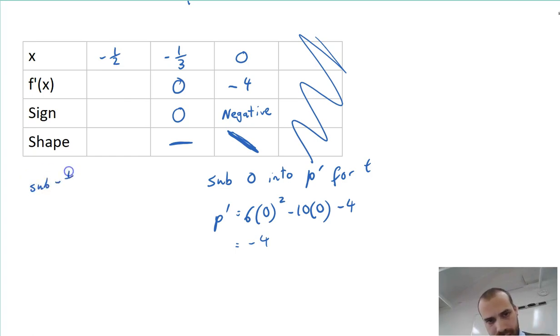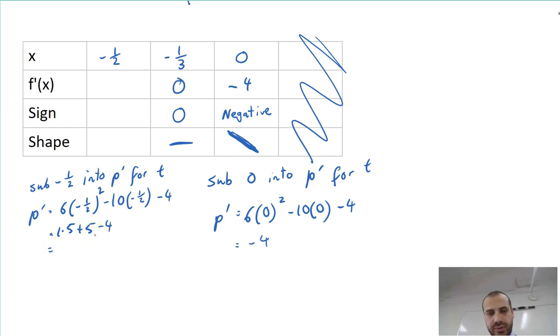Sub negative 1 half into p dash for t. p dash is going to be equal to 6 times negative 1 half squared minus 10 times negative 1 half minus 4. 1.5 plus 5 is 6.5 minus 4 is 2.5. What's the sign? The sign is positive. The shape is going to be like this.